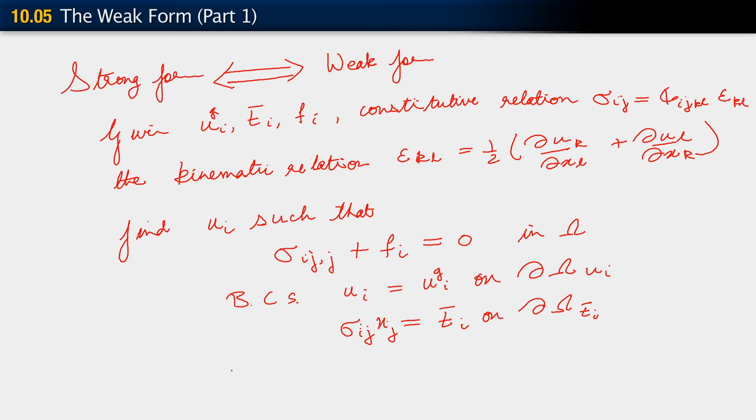Given u_g_i, t_bar_i, f_i, the constitutive relation sigma_ij equals c_ijkl epsilon_kl, the kinematic relation epsilon_kl equals one-half partial derivatives of u. We want to find u_i such that sigma_ij,j plus f_i equals 0 in omega, and boundary conditions: u_i equals u_g_i on the relevant Dirichlet boundary, and sigma_ij n_j equals t_bar_i on the Neumann boundary.